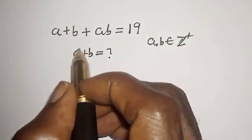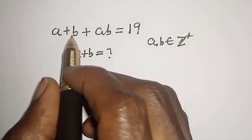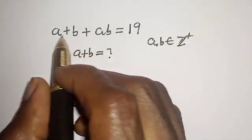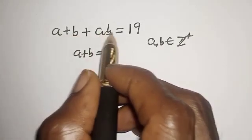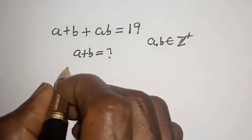Hello, welcome to Mathfocus. How to solve for A plus B from this given Math Olympiad algebra problem: A + B + AB = 19, where A and B are positive integers.